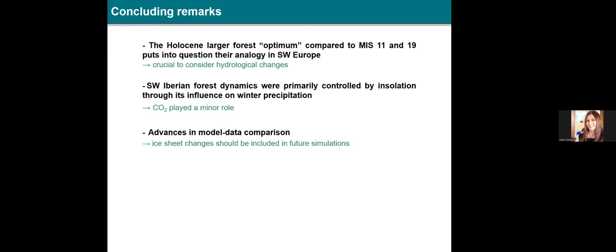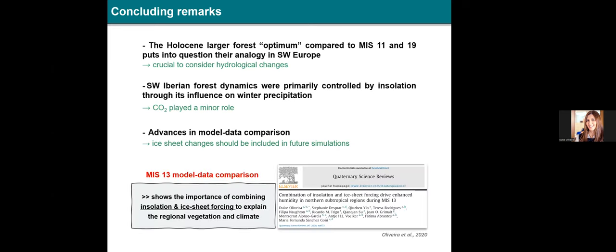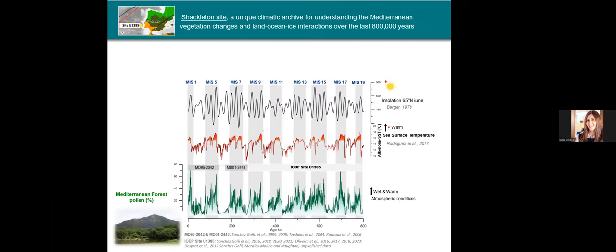Now you understand why I asked you to keep in mind the global benthic profile of Lisiecki and Raymo, where we could see that stage 19 was much more glaciated than stage 11 and the Holocene. The three main messages to take home: one, stage 11 and 19 cannot be considered as direct analogues for the Holocene, which was characterized by a much larger forest optimum. Therefore, when we speak about Holocene analogues, it is crucial to consider the key role of hydrological changes. This is very important in regions where vegetation communities are highly sensitive to moisture availability, like the Mediterranean region. Message two: we found that the forest dynamics were mainly controlled by insolation, while CO2 played a minor role. And finally, this study highlights that interaction with the modeling community needs to be reinforced in future work should include ice sheet dynamics. In fact, it was what we did in the recent work of stage 13 that I told you about before. In this study, the model simulations include the ice sheets, and we were finally able to demonstrate the importance of ice sheet forcing to explain the regional vegetation and climate.